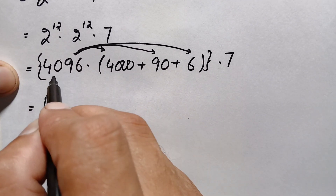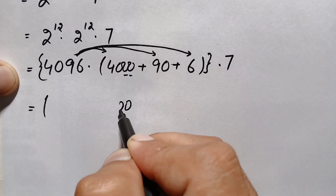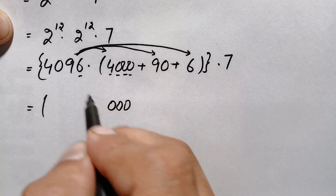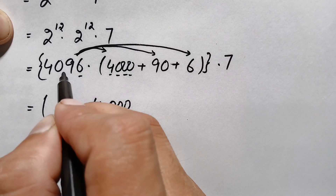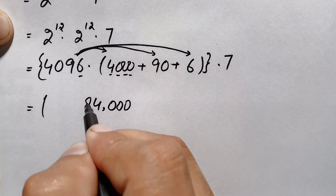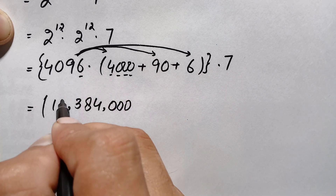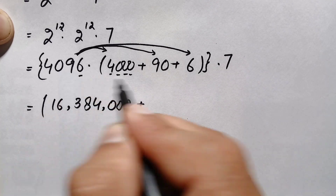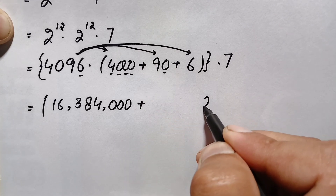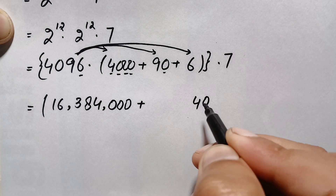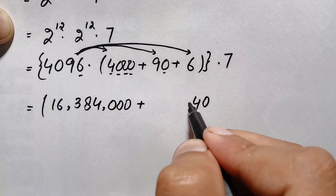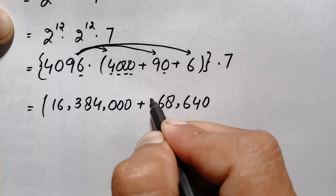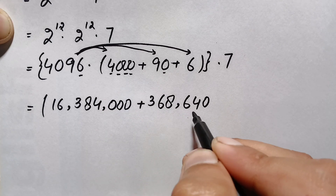First we multiply 4096 by 4000: multiplying by the three zeros gives zeros, then 4 times 6 is 24 (write 4, carry 2); 4 times 9 is 36 plus 2 is 38 (write 8, carry 3); 4 times 0 is 0 plus 3 is 3; 4 times 4 is 16. This gives 16,384,000. Next, multiplying 4096 by 90: 9 times 6 is 54 (write 4, carry 5); 9 times 9 is 81 plus 5 is 86 (write 6, carry 8); 9 times 0 plus 8 is 8; 9 times 4 is 36. This gives 368,640.